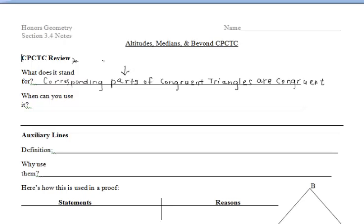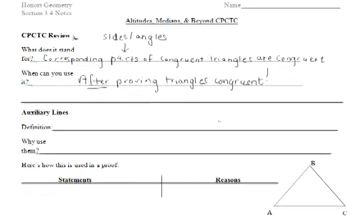When we say corresponding parts of congruent triangles are congruent, the parts of those triangles are the sides and angles. So just keep that in mind. When do we use CPCTC? We can only use CPCTC after proving triangles congruent.